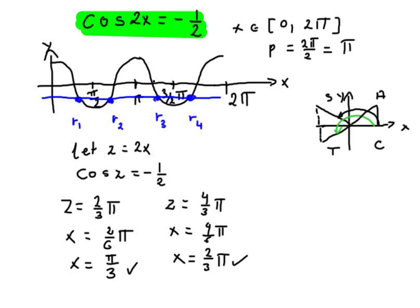Remember that the period of the function is pi radians. So root 1 plus pi will get you root 3. Okay. So x is equal to pi over 3 plus pi, which is equivalent to 4 over 3 pi.